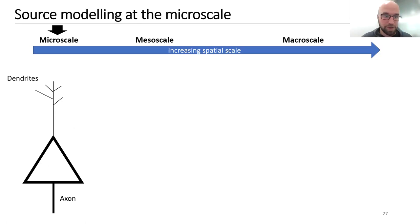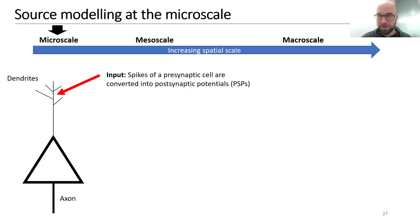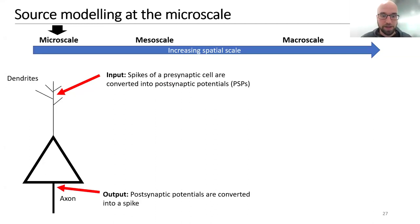Thinking about a single neuron very simplistically, it performs two operations: first, it receives input at the dendrites where spikes of presynaptic cells arrive and are converted into postsynaptic potentials; second, the postsynaptic potential is converted back into a spike at the axon. These are the two basic operations a neuron performs.